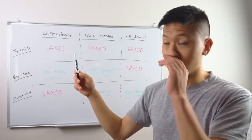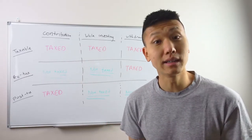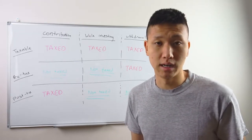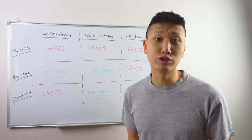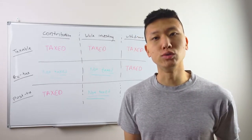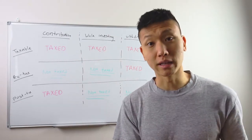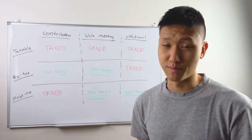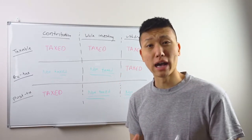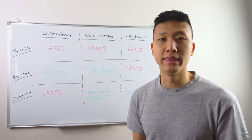With taxable accounts, you get taxed on your contribution because your income is already taxed. Let's say you make $100 a week — maybe $20 goes to taxes, so you're left with $80. That $80 is what you're actually able to put in, not the $100 you technically made. Uncle Sam will come after you if you don't pay. And while investing, you also pay taxes through dividends.